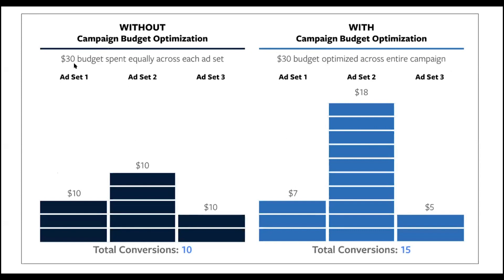When we are spending $30, we have three ad groups in this campaign, and we have 10 conversions on this total campaign. We have $10 in this campaign, but if we have two ad sets, we have $10 in the conversion. We have three ad sets, and we have two conversions on one, and three conversions on another, but the budget was equally split: 10, 10, 10.